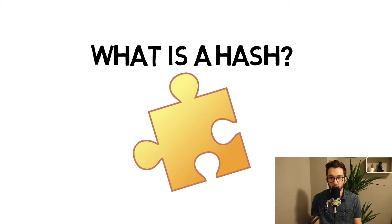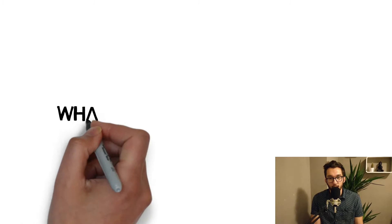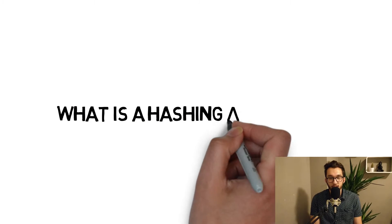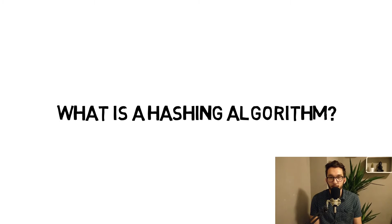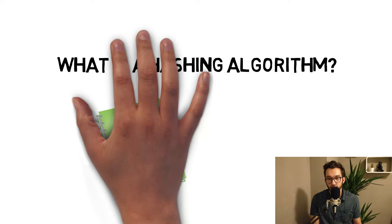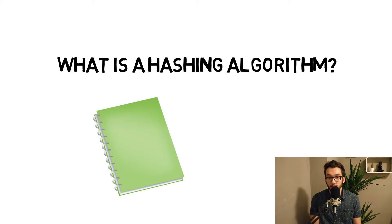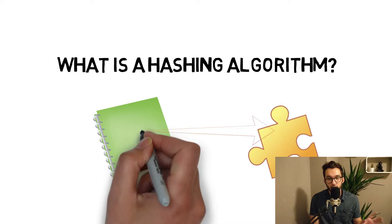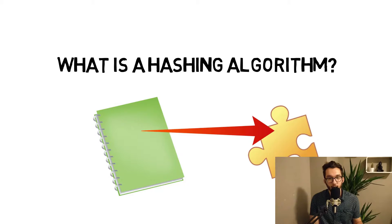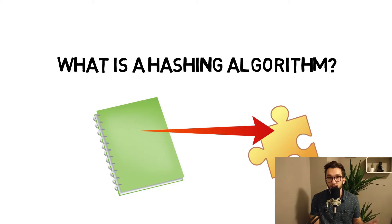Hash algorithms are the process of getting a hash out of data. They were already in use way before Bitcoin. In technology we had the MD4 hashing algorithm, developed in 1990, and SHA-256, the Secure Hash Algorithm, which was developed by the NSA in 2001 — and that's also one of the most common ones nowadays.